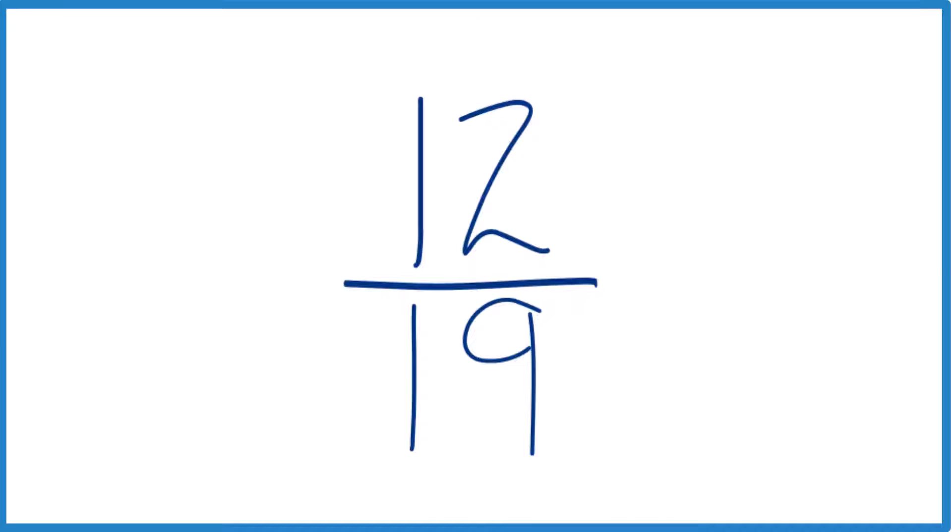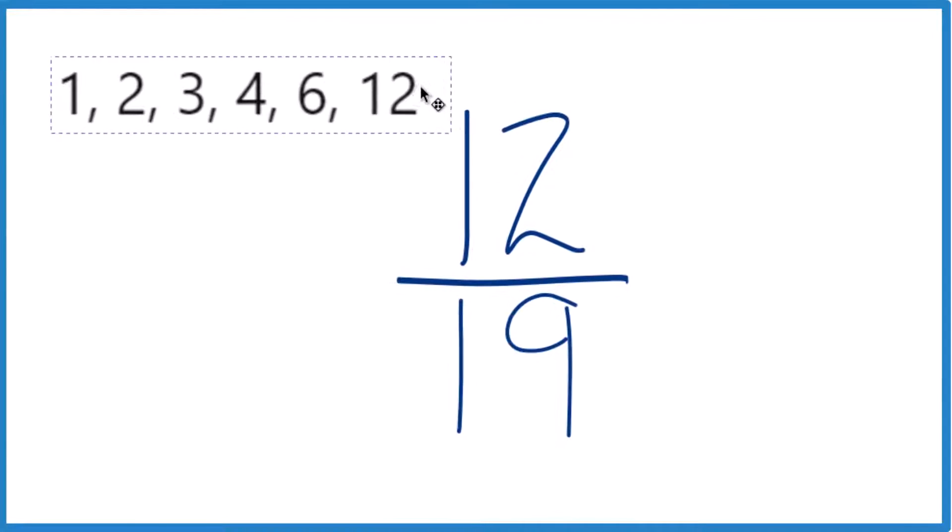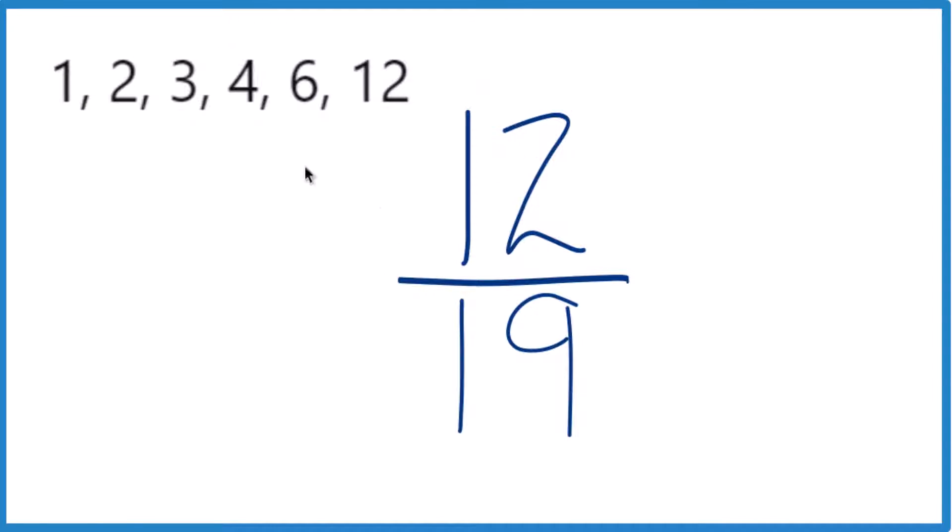So for 12, there are a number of different factors. I'll just put them up here. You could have 1 times 12, that's 12, 2 times 6, that's 12, or 3 times 4, that's 12 as well.